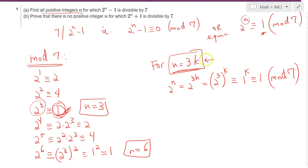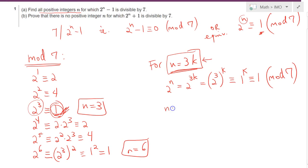In fact, when n is equal to 3k plus 1, that would simply be 2 to the power 3k plus 1, which is 2 to the power 3k times 2, which is simply congruent to 2 in mod 7.